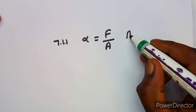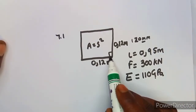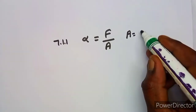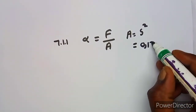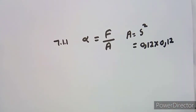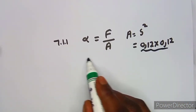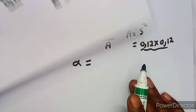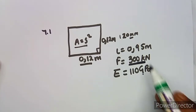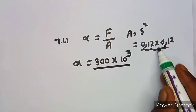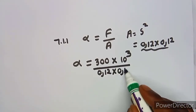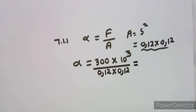We need to find the area, which is the area of a square: side squared, so 0.12 squared, or 0.12 times 0.12. The stress is then force over area, which is 300 times 10 to the power 3 — that's 300 kilonewtons — over 0.12 times 0.12.